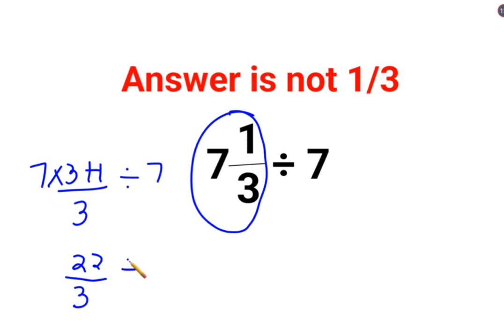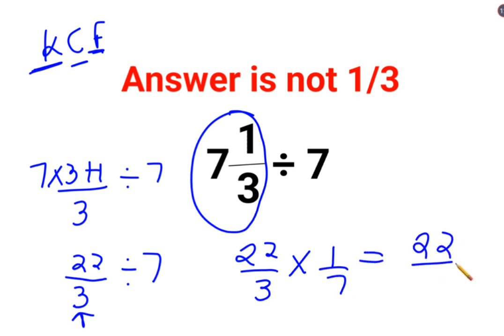Now this is divided by 7. Whenever you have to do division, especially in case of fractions, you need to remember the rule of KCF where K stands for keeping the first number as it is. So we will keep 22/3 as it is. C stands for changing the division sign to multiplication. F stands for flipping or taking reciprocal of 7 which is 1/7. So answer for this question is supposed to be 22/21.